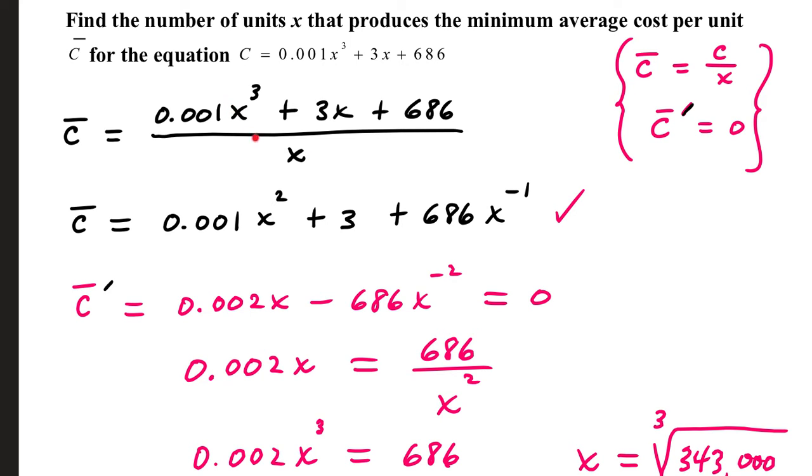Taking each term in the numerator one at a time, dividing off an x. That reduces 3 to square. Those matching x's cancel, leaving 3, and then we have 686 over x. If we move the x from the denominator next to the 686, we can just negate the power. Taking the derivative, average cost first derivative,